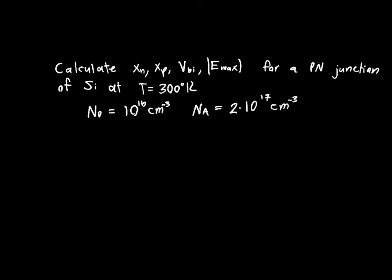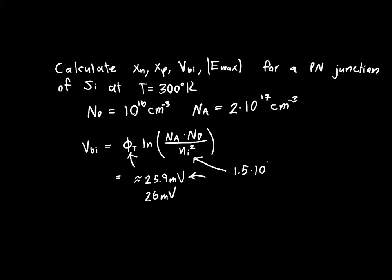We can start off this problem fairly easily. We have an equation that relates VBI and the doping concentration. It's equal to the thermal voltage times the natural log of NA times ND divided by the intrinsic doping of silicon squared. I highly recommend that you memorize these constants. Phi_T is approximately 25.9 millivolts if you want three digits of precision or 26 millivolts if you only want two. And Ni squared is 1.5×10^10 per centimeter cubed.